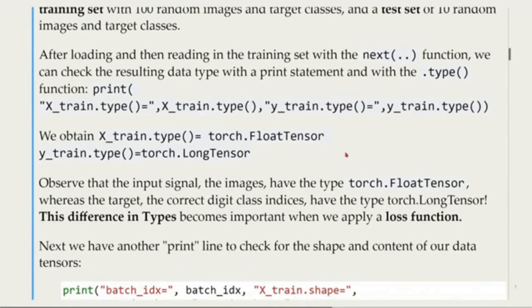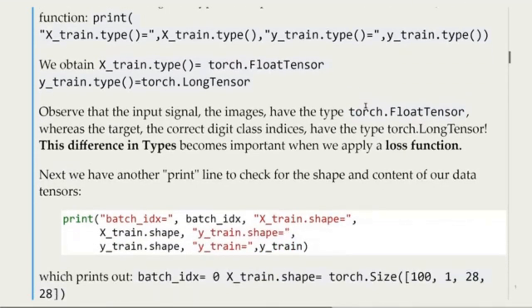We observe that we have a TorchFloat tensor for the X-train type and a TorchLong tensor for the Y-train type. X is our input and Y is our target. The input signals, the images, have the type TorchFloat tensor, whereas the target, the correct digit class indices, have the type TorchLong tensor. This difference in types becomes important when we apply a loss function.